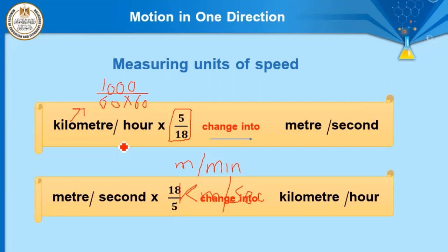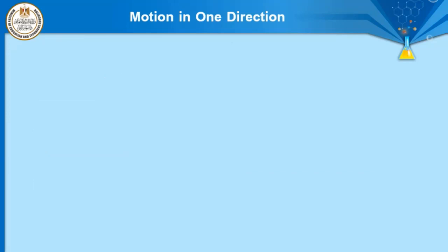Which object has speed measured in kilometers per second? Only one object: light. Light is the only object whose speed is measured in kilometers per second.